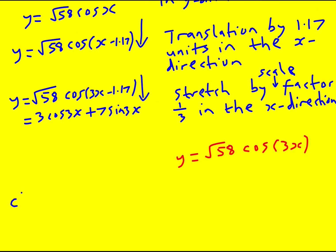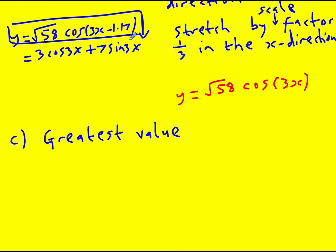Now C, we're asked for the greatest value of the function. And we're going to really focus on the final function here. Not the actual original one, but this one here, because it's much easier to look at because the maximum value of cos is 1. And therefore, the maximum value of this function is going to be root 58. And it's going to occur when cos of 3x minus 1.17 is equal to 1. Now let's just take a little look at that cos curve. It's actually equal to 1 when 3x minus 1.17 is 0.